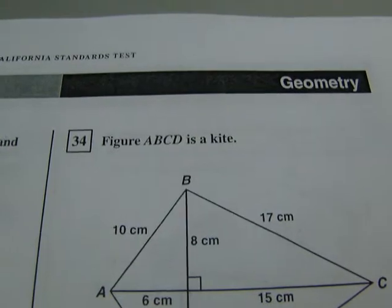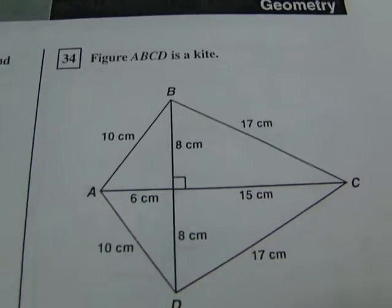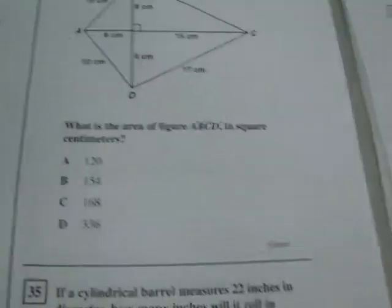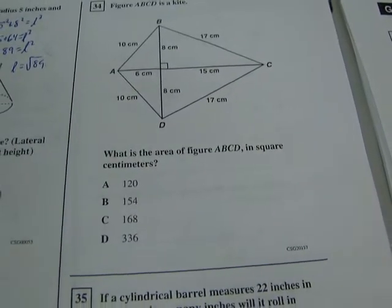Figure 34 says figure ABCD is a kite, and it says what is the area of figure ABCD in square centimeters?